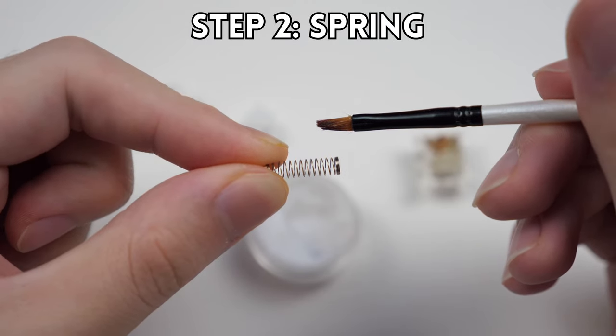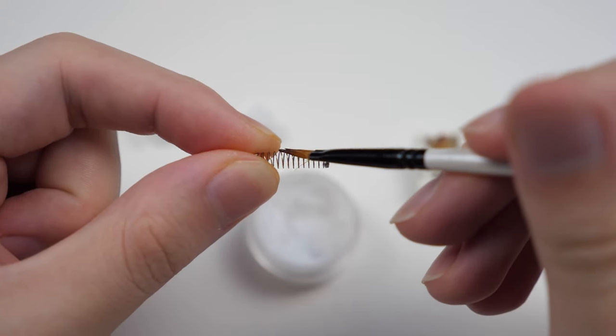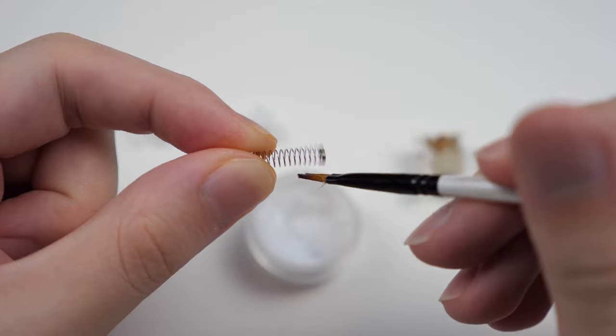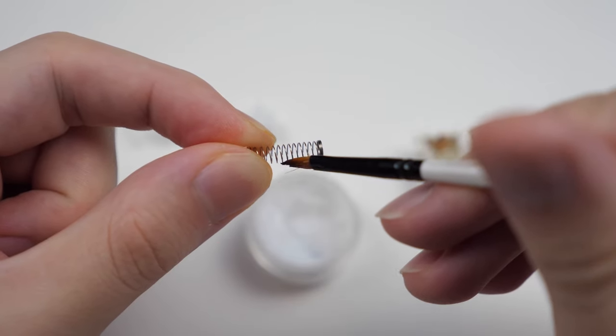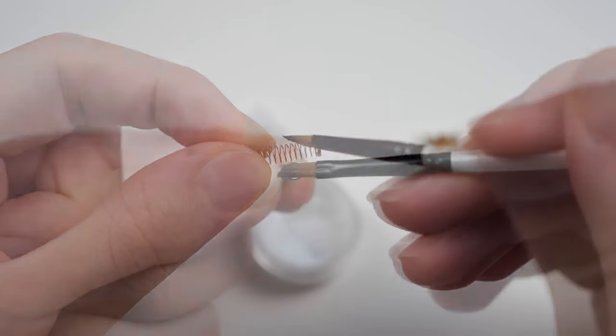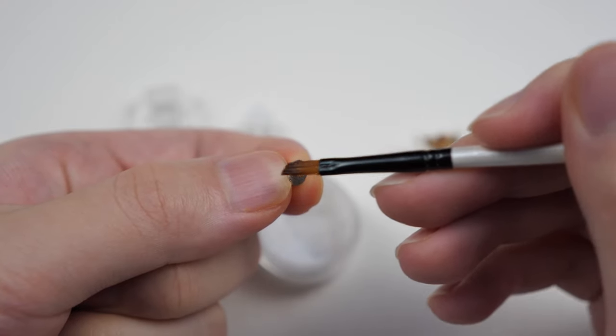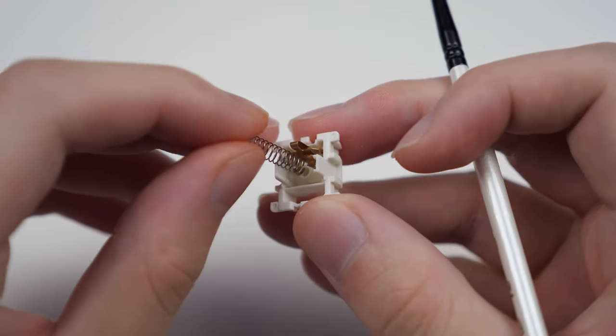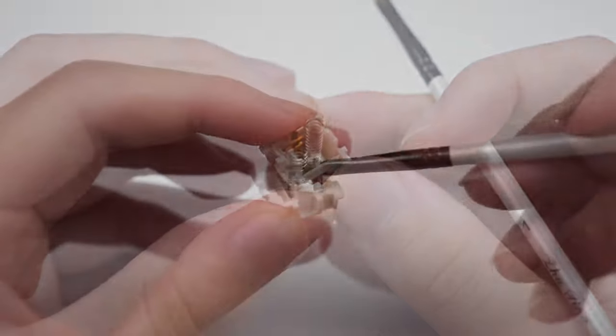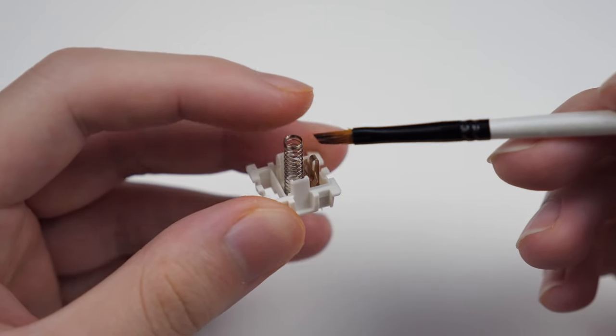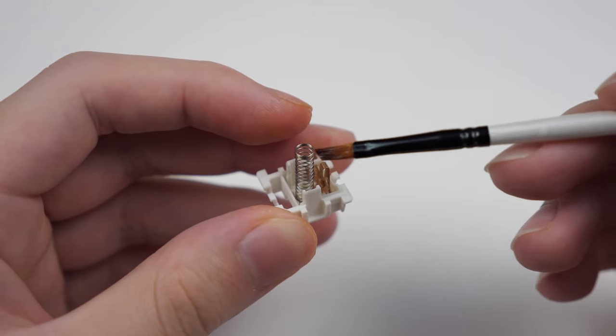Next we lube the spring. With the remaining lube on your brush, brush the sides gently to coat them with a thin layer of lube. This reduces the sound that the springs make. Then apply lube to one of the ends. And after you're done that, place the lube side of the spring onto the bottom housing, and then brush the rest of the spring, topping it off at the other end.